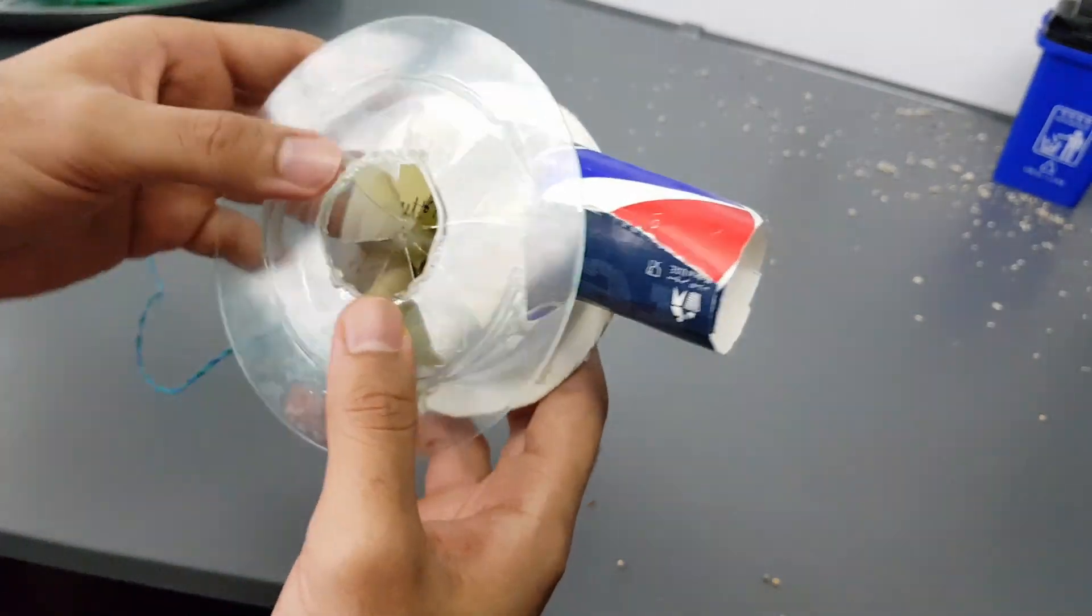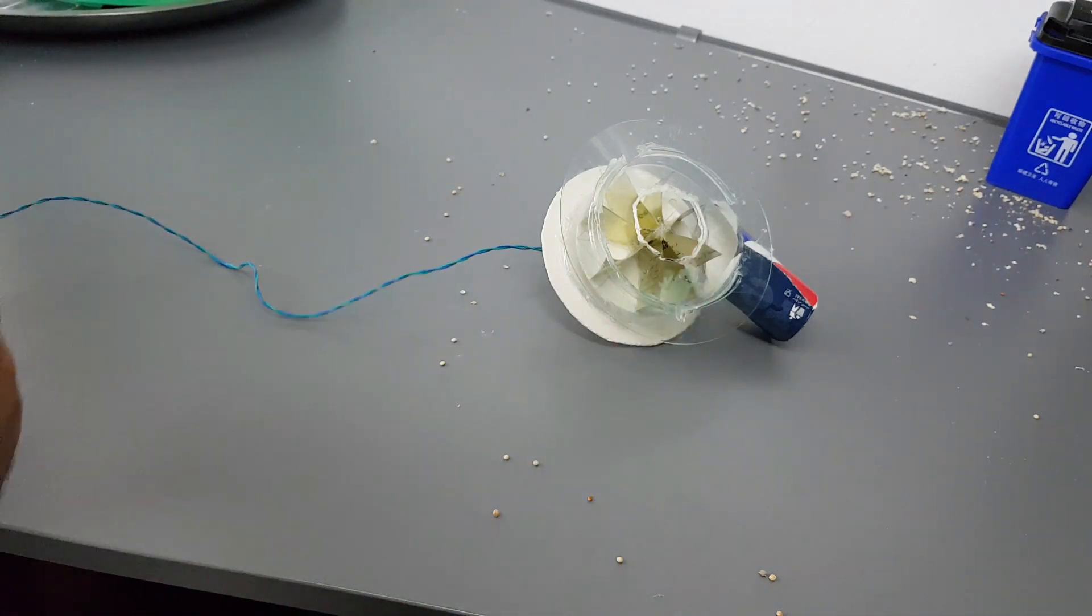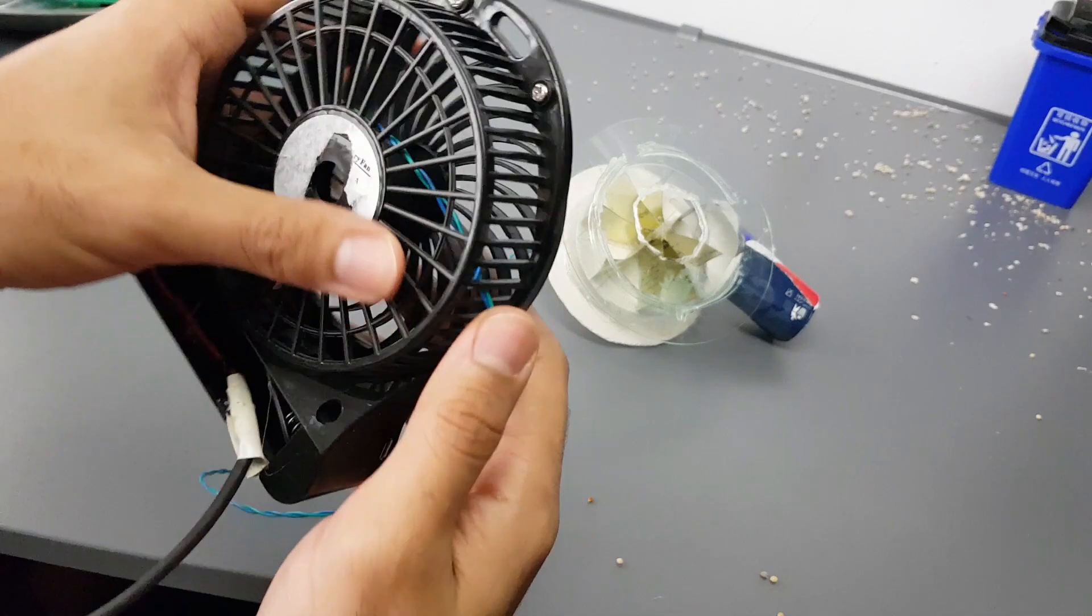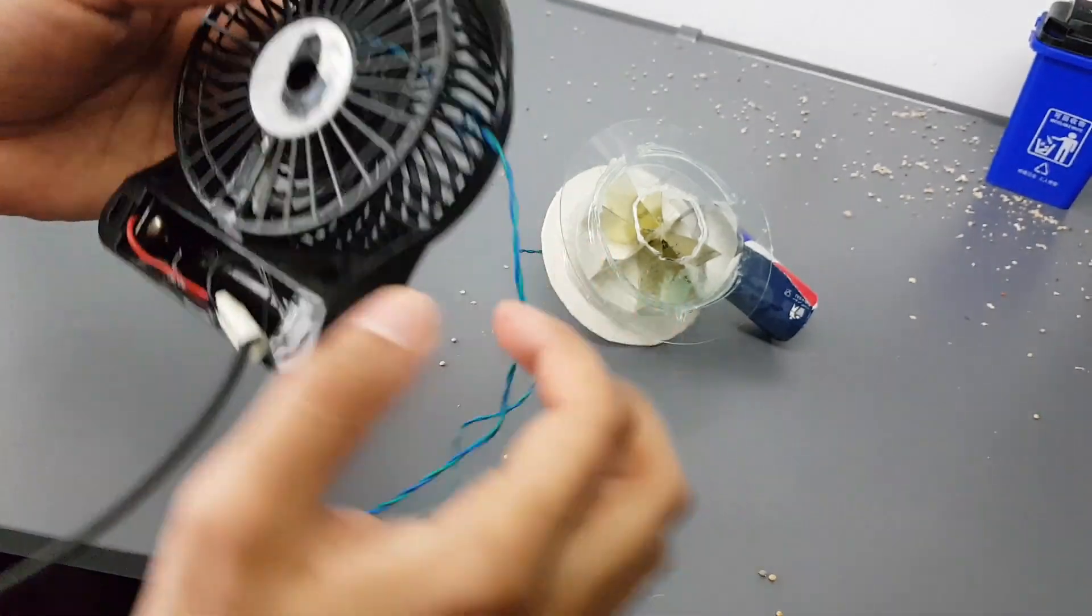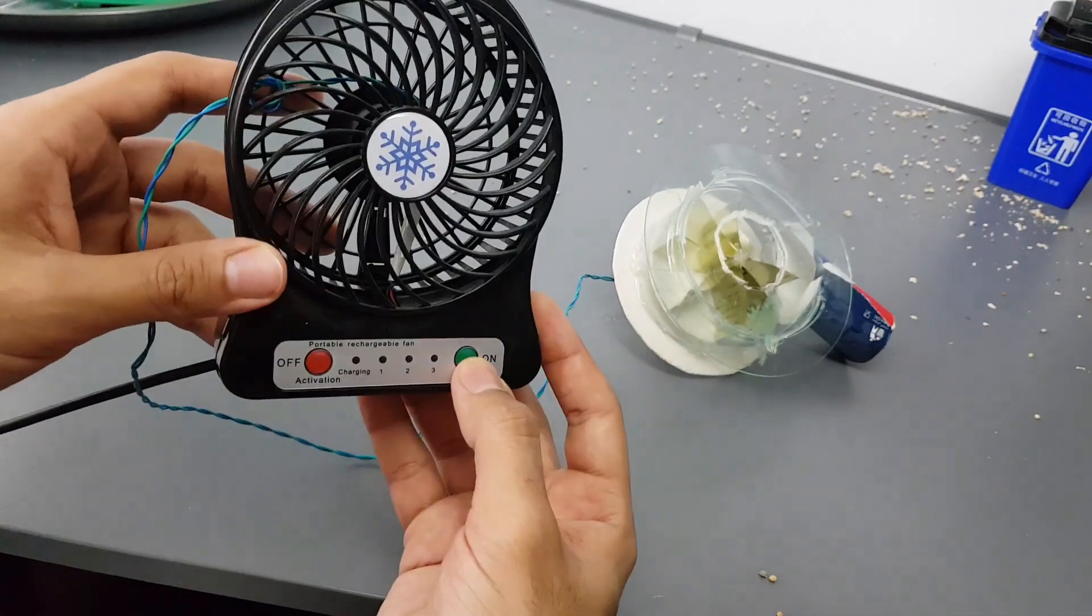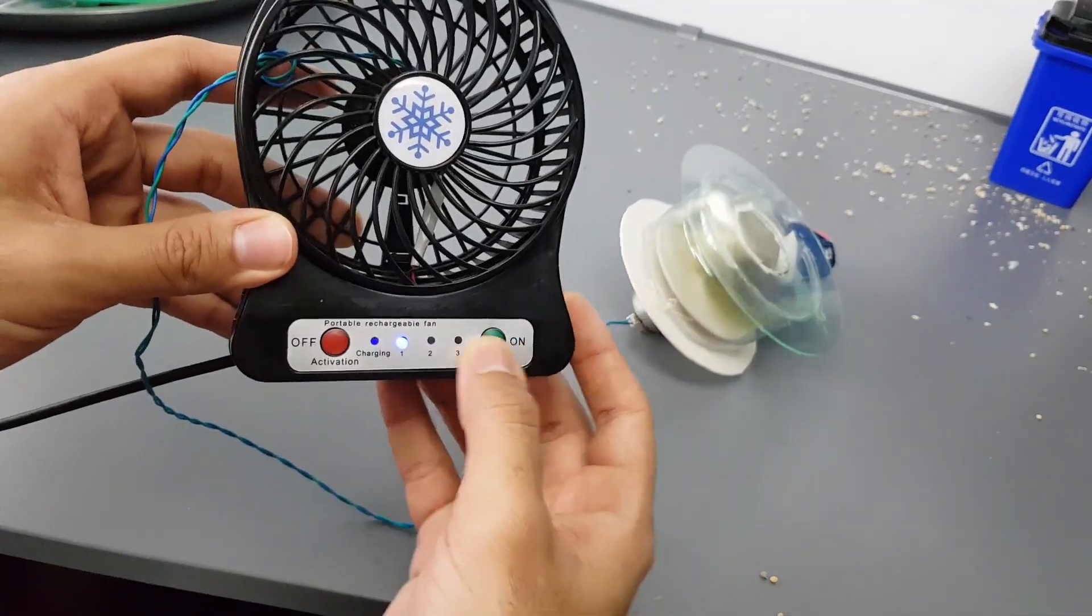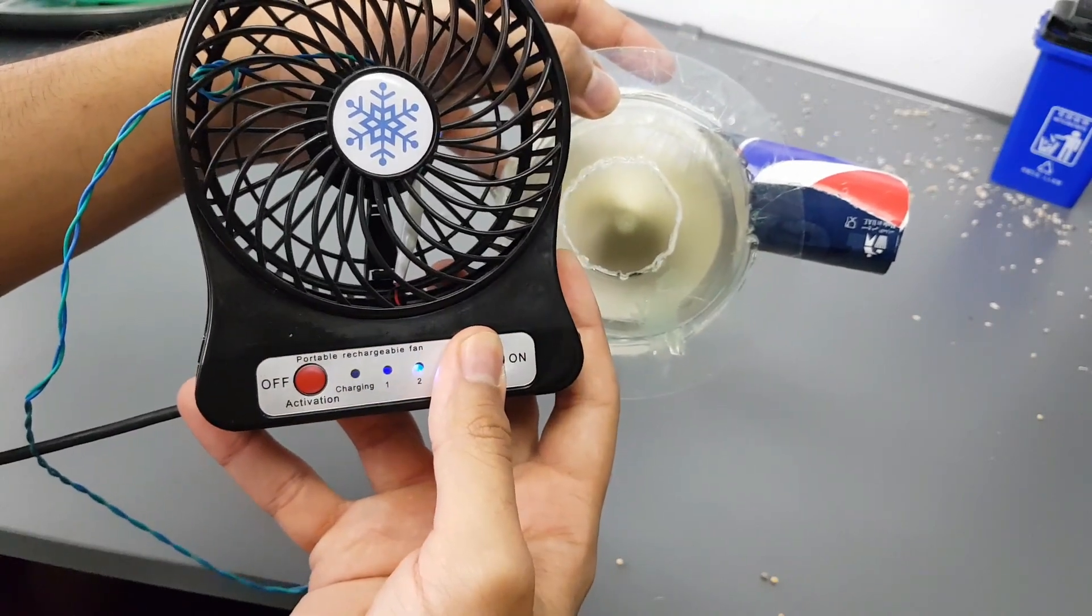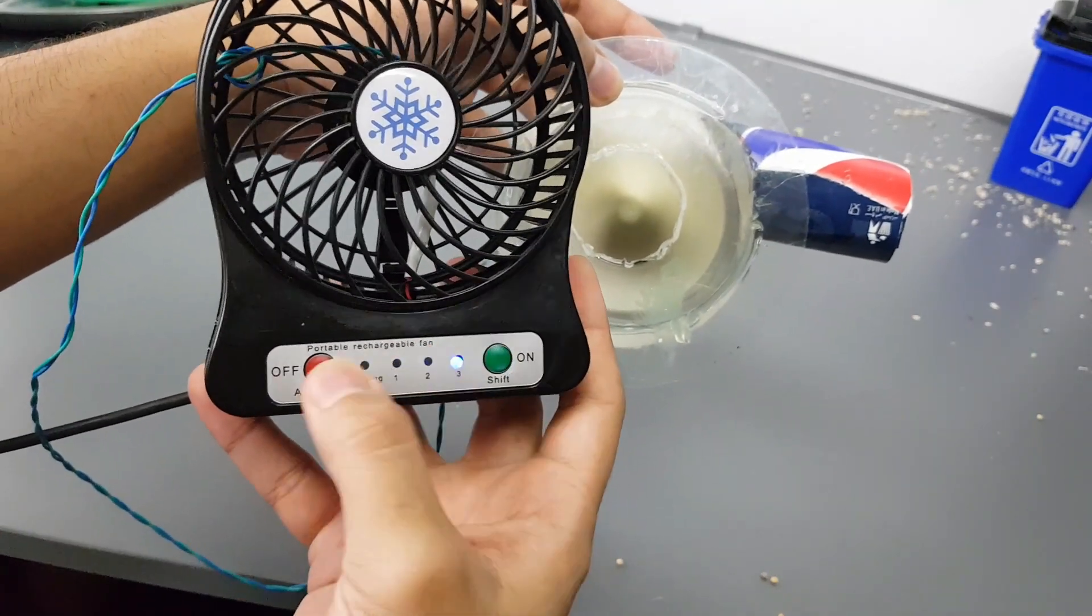By the way, this one works with only 5 volts. You can use a 5-volt battery, but in my case I'm using this fan. I destroyed it already and I took a wire from inside and I plugged it on this motor. So now I have three speed options. So if you turn it on, it's speed number one, speed number two, speed number three.